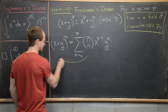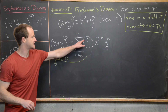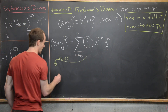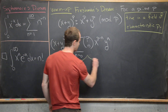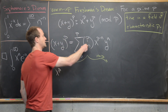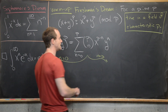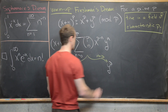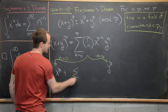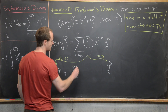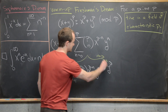Now I'm going to pull out the first and last terms. For the n equals 0 term, we get p choose 0, which is 1, times x to the p, times y to the 0. For the n equals p term, we get p choose p, which is also 1, times x to the 0, times y to the p. What we have in the middle is the sum from n equals 1 to p minus 1 of p choose n times x to the p minus n times y to the n.